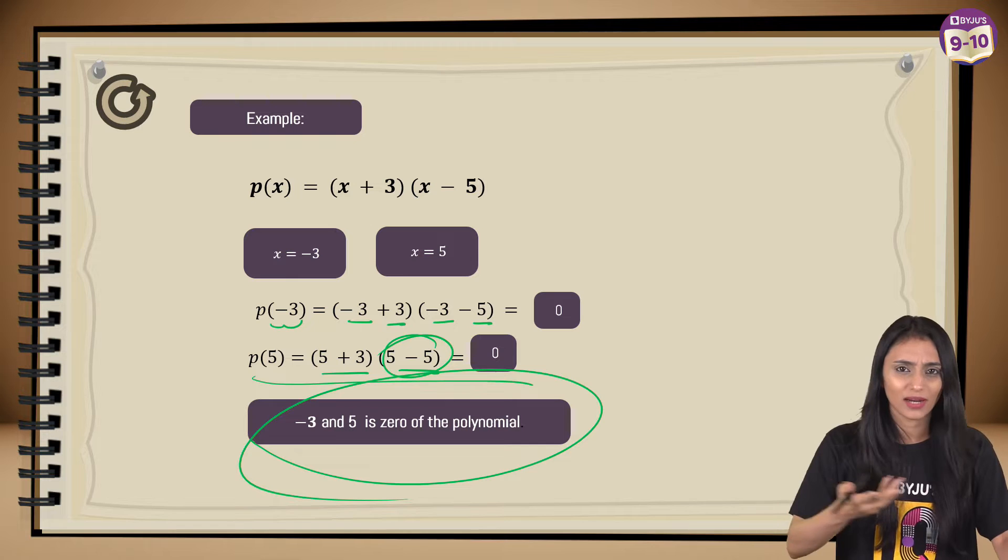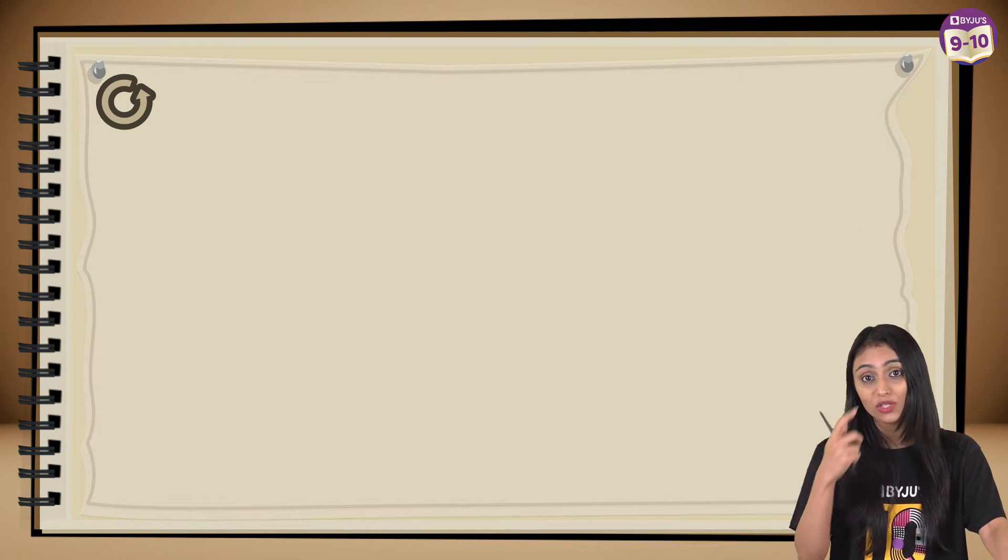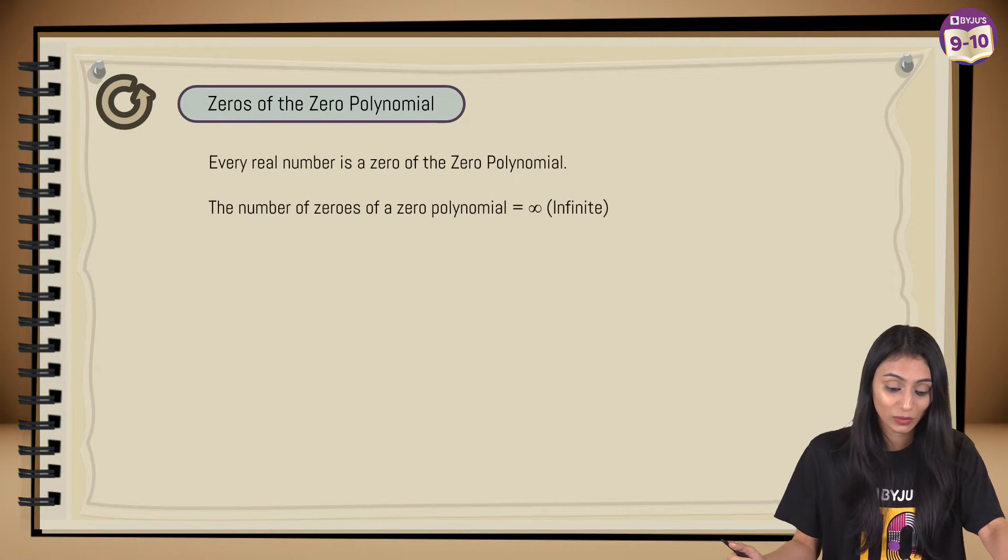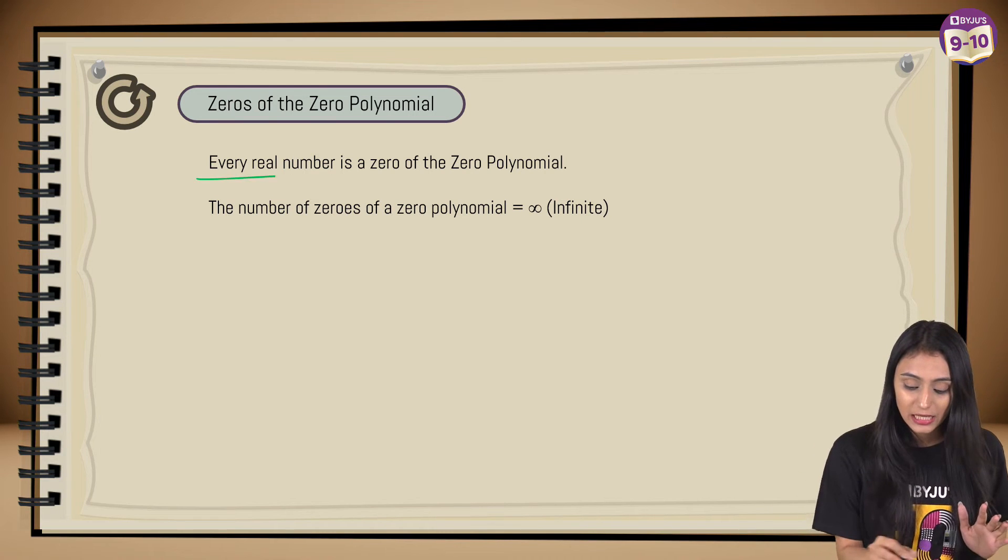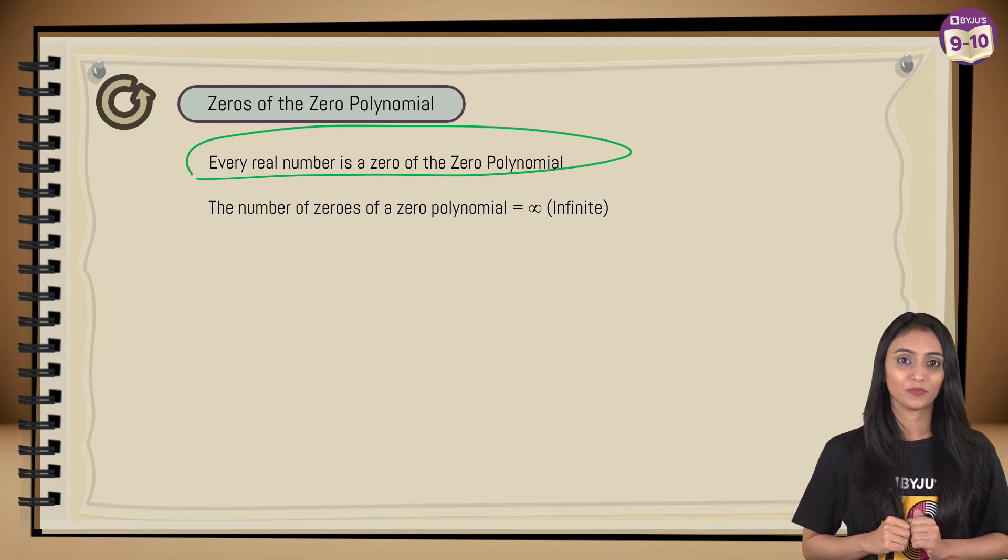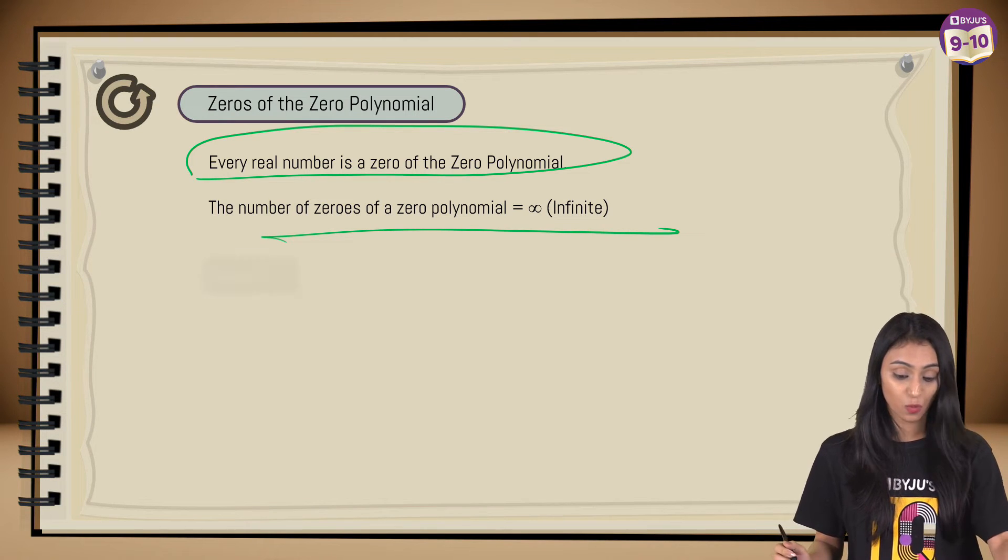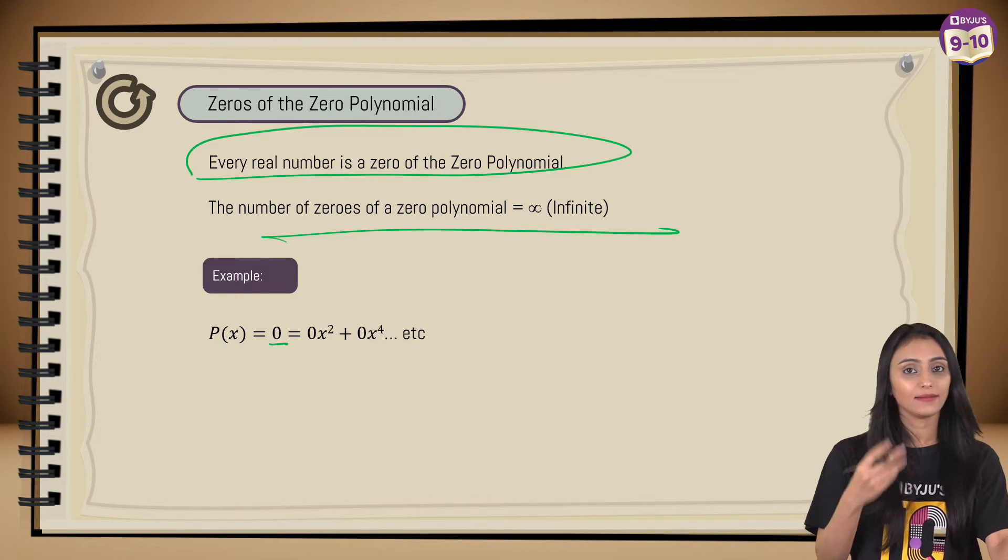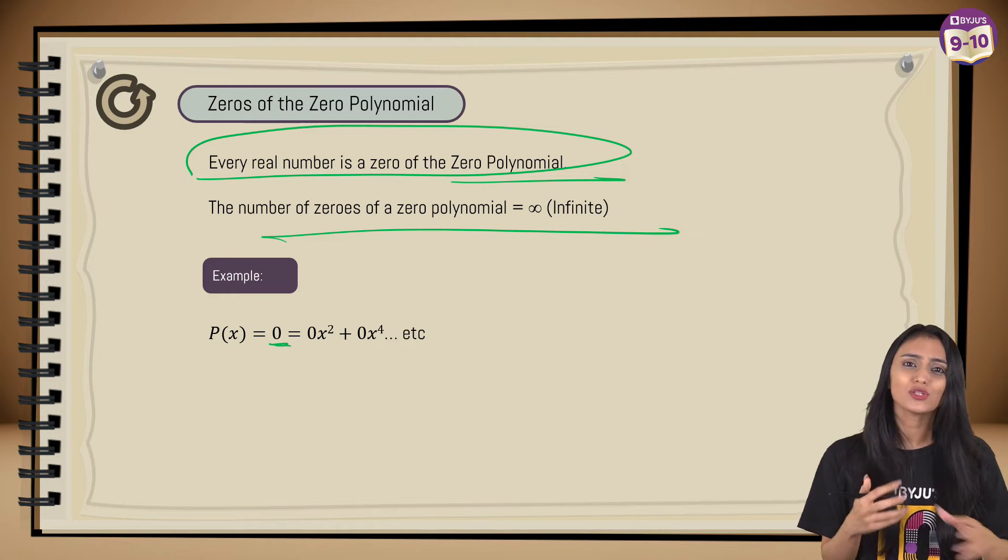So here we talked about a general polynomial. What is, because this is one question which confuses a lot of students: what are the zeros of the zero polynomial? So every real number is basically a zero of the zero polynomial. That means the number of zeros for a zero polynomial are going to be infinite. What does that mean? Let's take an example. Let's suppose I've got a polynomial in x, and the value, as I said, it's a zero polynomial so it is zero.